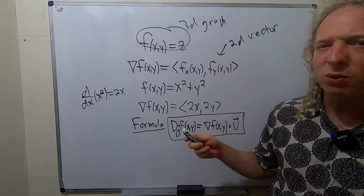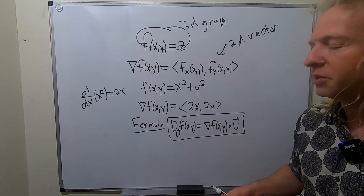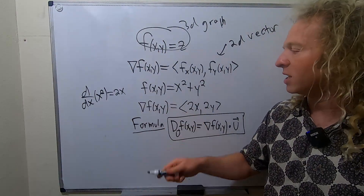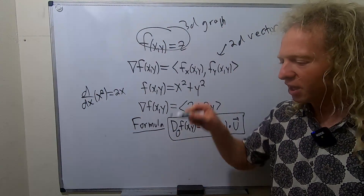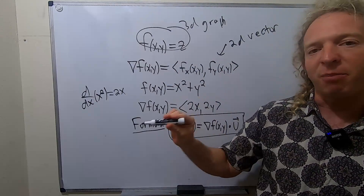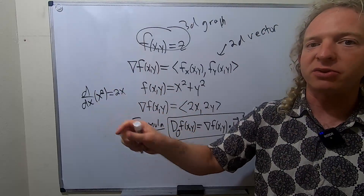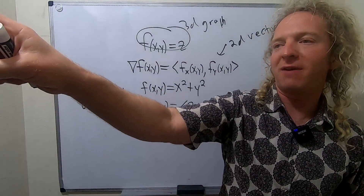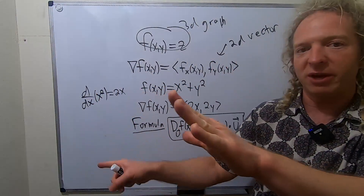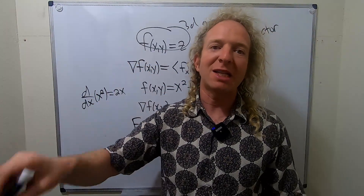So if anyone asks what a gradient vector does, you can say: pretend you're standing on rolling plains with lots of hills. The gradient is a 2D vector on the ground — it points in the direction of maximum increase. Maybe this way you go up faster than that way; the steepest ascent is in the gradient's direction. Likewise, if you put a negative sign on it, it would point in the direction of maximum decrease.